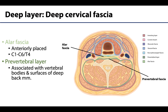The prevertebral layer, shown in darker green, is closely associated with the vertebral bodies. There will be an additional layer of fascia called the alar fascia, indicated in light green, which is more anteriorly placed. The alar fascia sits between the buccopharyngeal fascia and the prevertebral fascia.